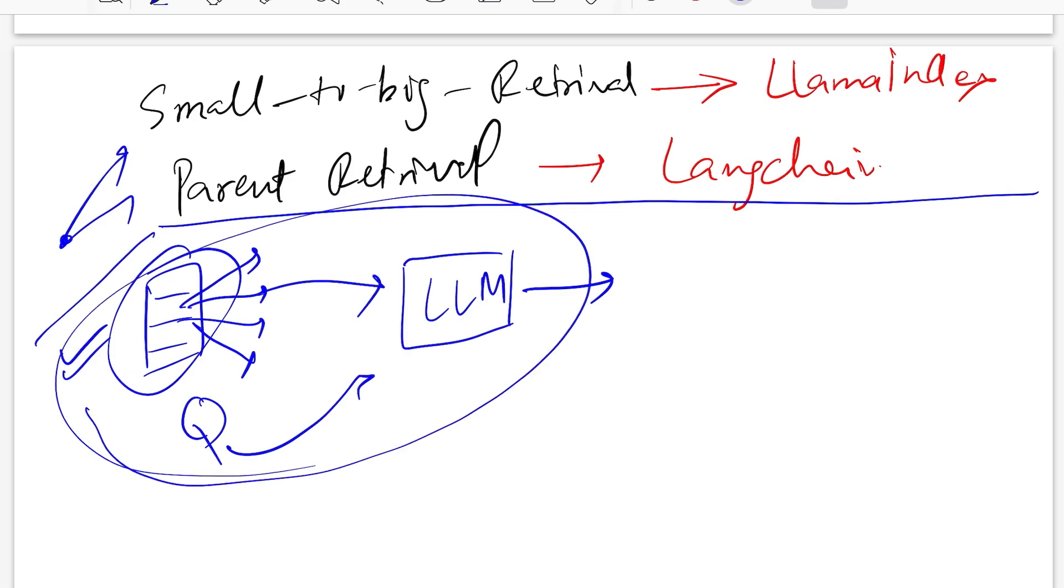That is a typical RAG pipeline. You have some nitty-gritties in between, for example, you have a vector database that helps you choose what is the most relevant chunk or chunks for a given query in an efficient fashion. There are a lot of optimizations that you can do at a vector DB level which I have talked in my previous video.